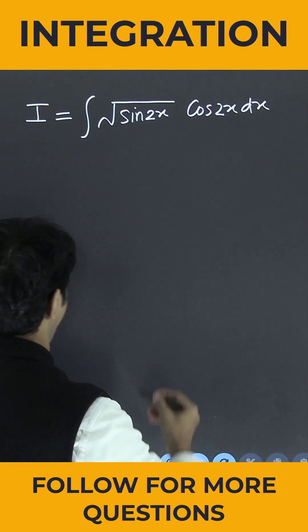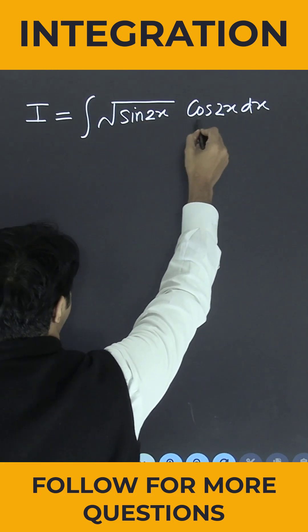One integration is given to us: integration root sin 2x into cos 2x into dx.